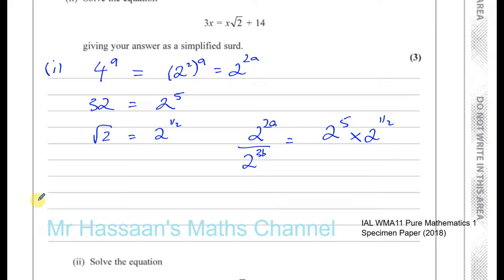When you are dividing two numbers in index form, you subtract the powers. You have 2 to the power of 2a minus 3b. They have the same base, 2, division, you subtract the power. And when you're multiplying two numbers with the same base in index form, you add the power. So it's 2 to the power of 5 and a half, which is 11 over 2.